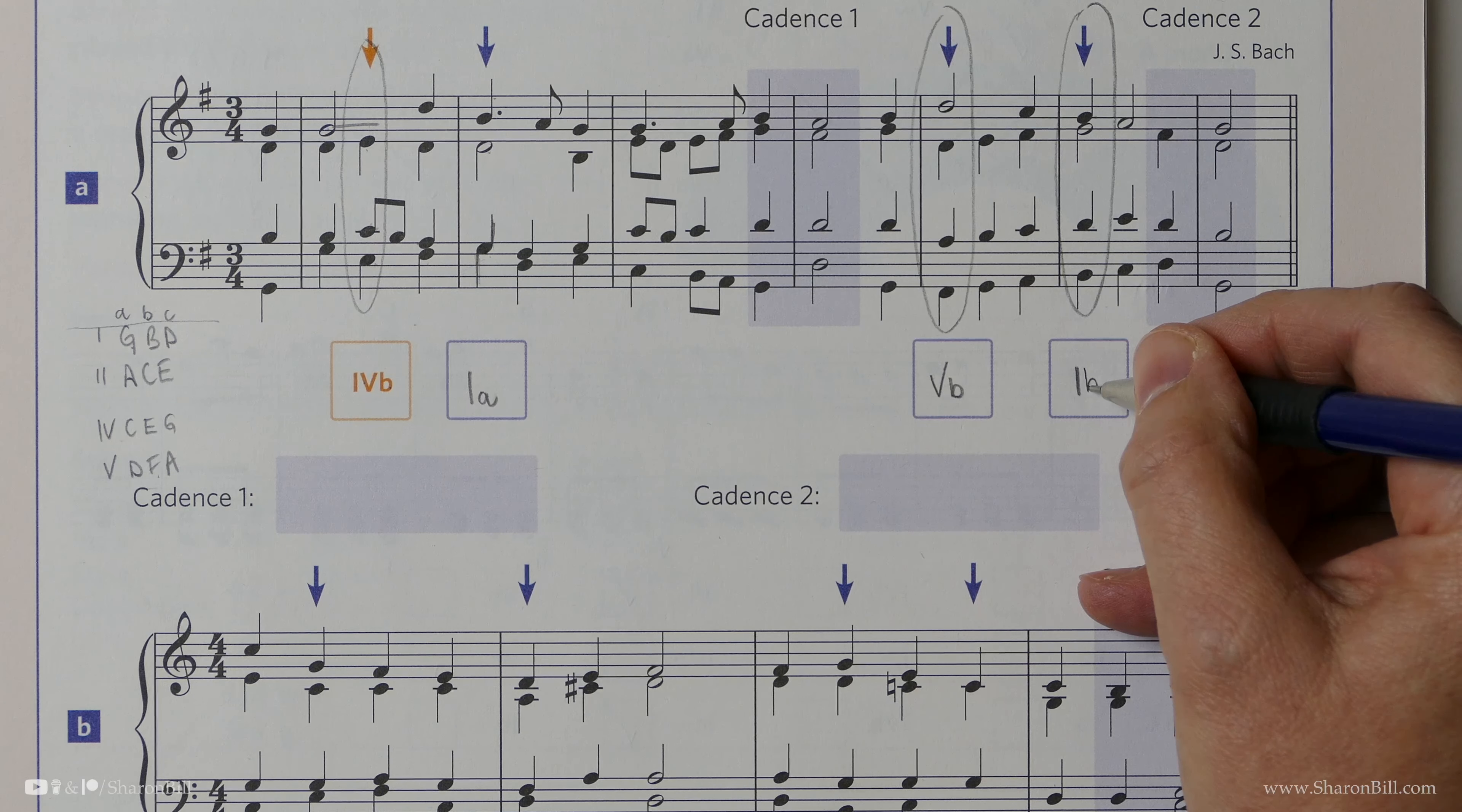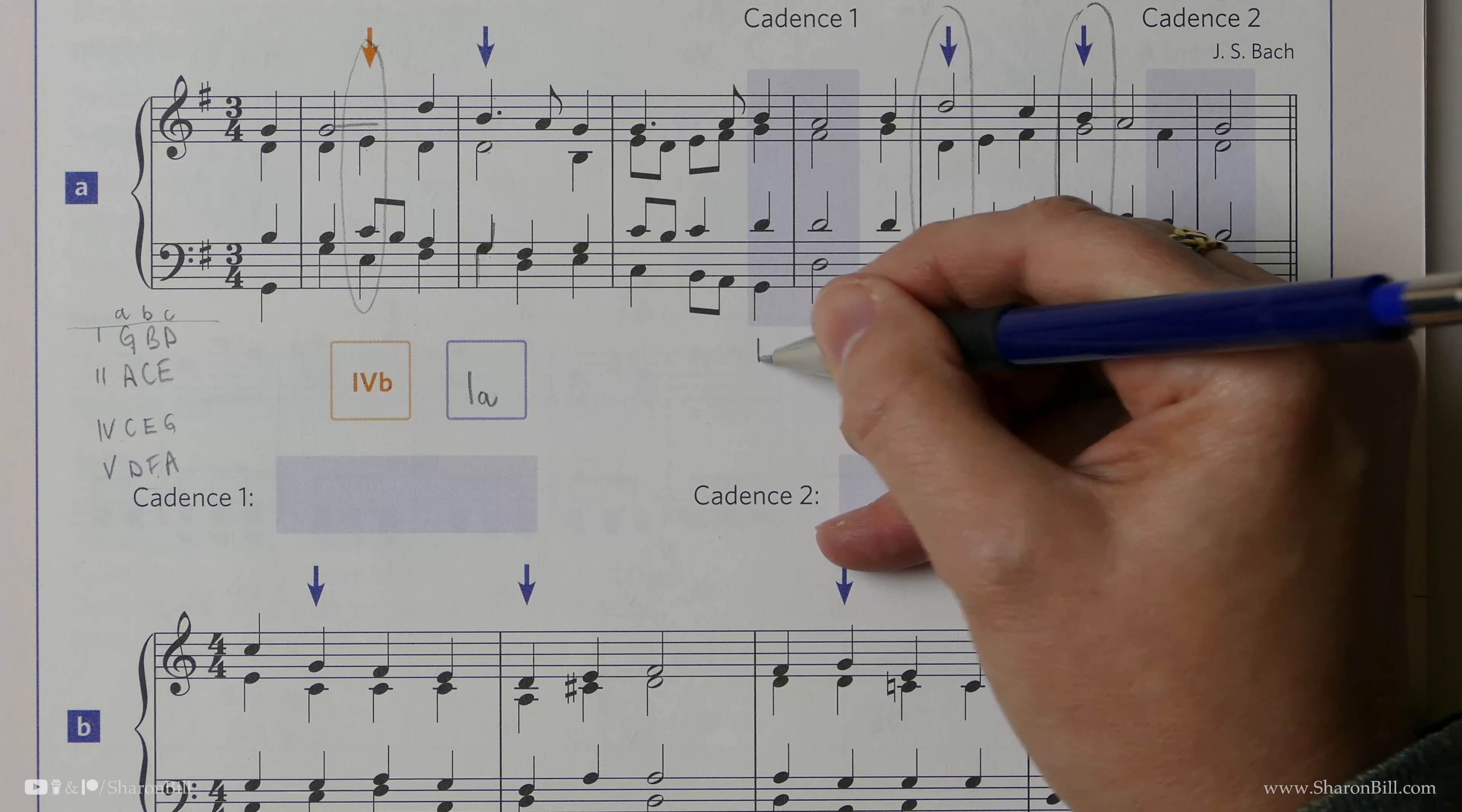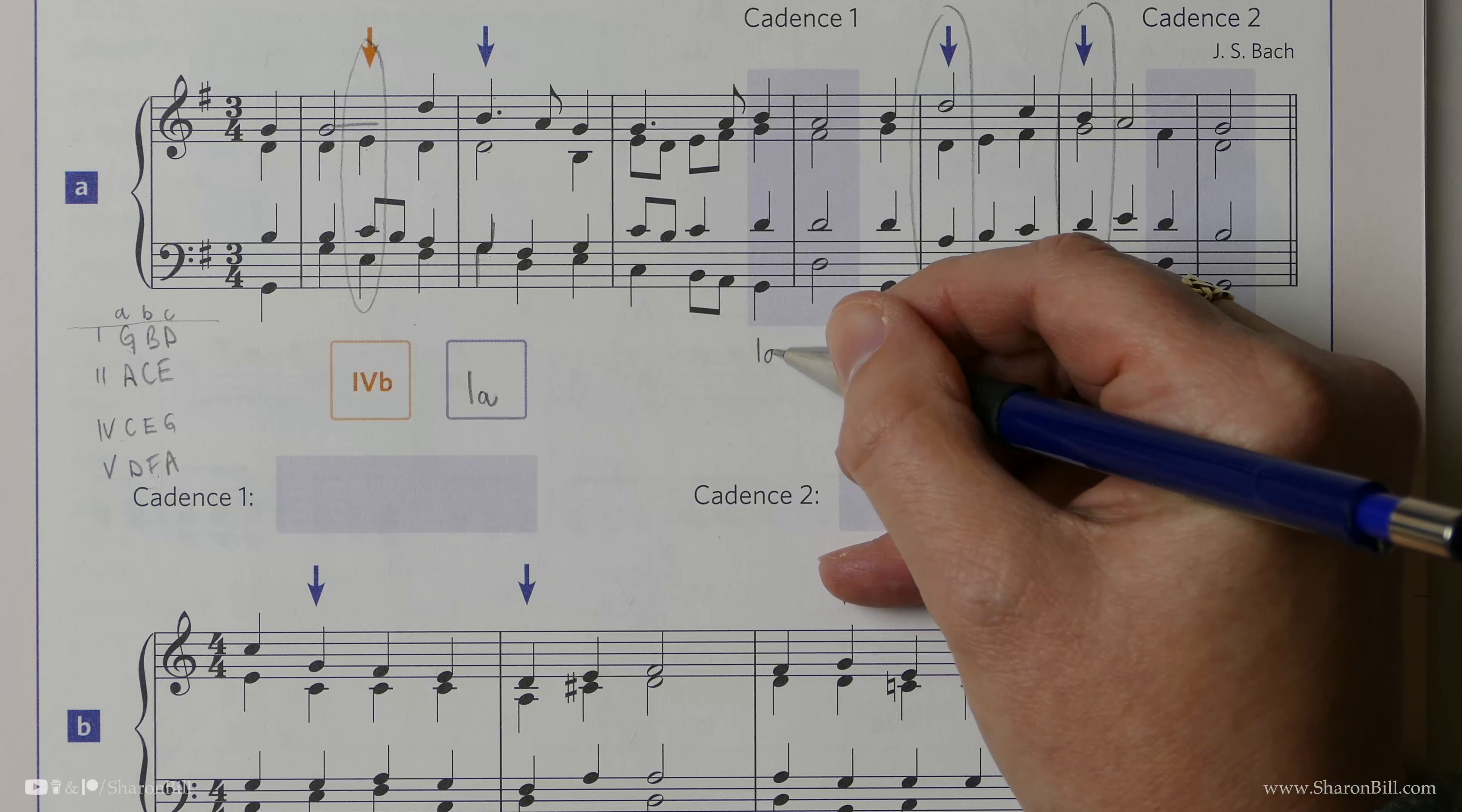Now, we haven't finished labelling the chords yet because we still need to describe these cadence points, which we can't do until we've decided which chords they are. So here we have a G, D, G, B. That's a chord 1. We don't really need to know which position it's in to know what cadence this is, but let's do that just for some extra practice. It won't harm to do a little bit extra work. And so as the G is in the bass, the root note, we're in root position, so that's 1A.